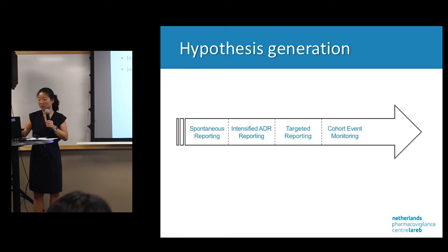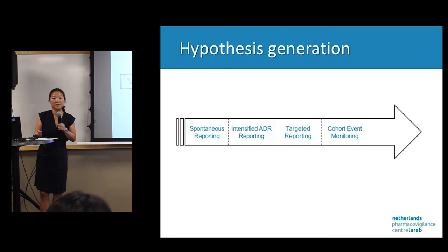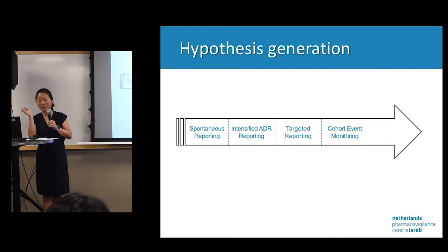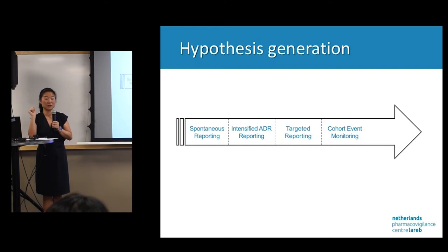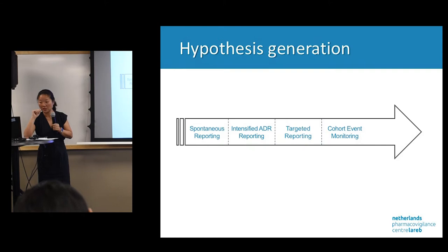Within the spectrum of hypothesis generation you have different methods, going from unstructured to more structured. From an epidemiological point of view, spontaneous reporting is the least structured form, but because it's quite unstructured it gives you the chance to identify things you didn't think about yourself. A bit more structured is intensified ADR reporting, then targeted spontaneous reporting, and cohort event monitoring starts moving toward hypothesis confirmation.